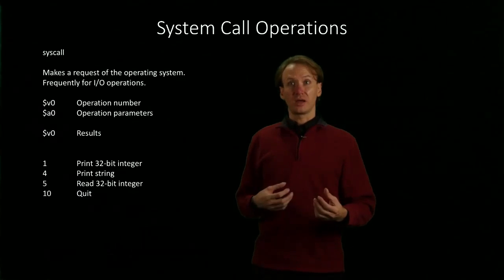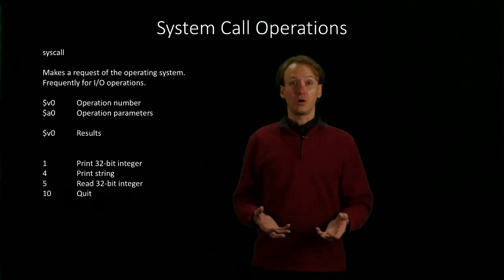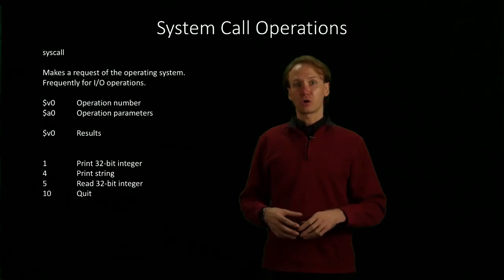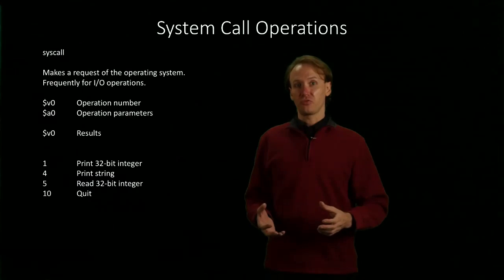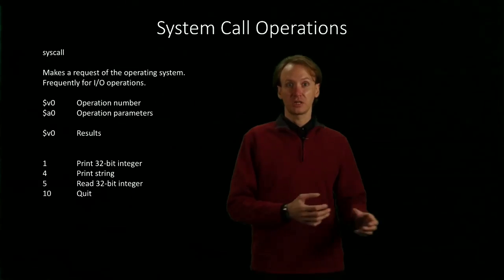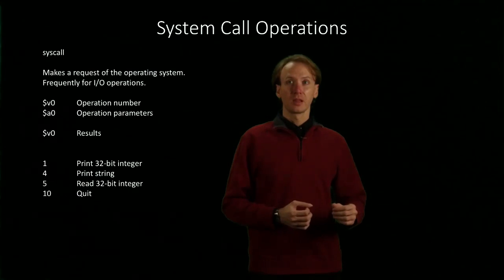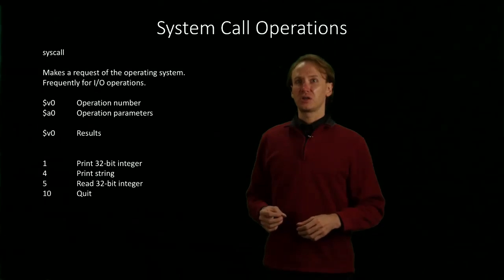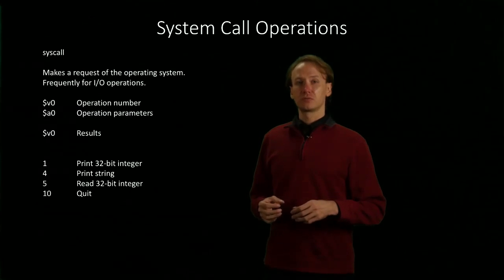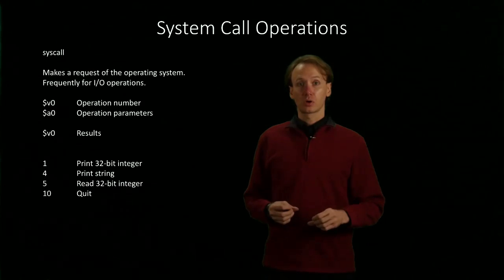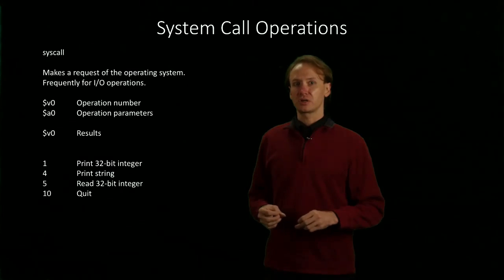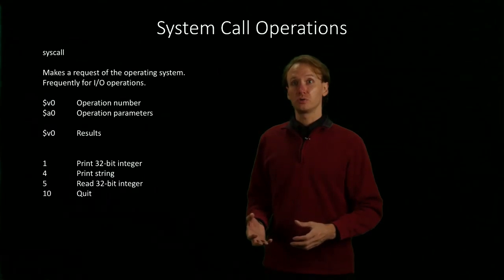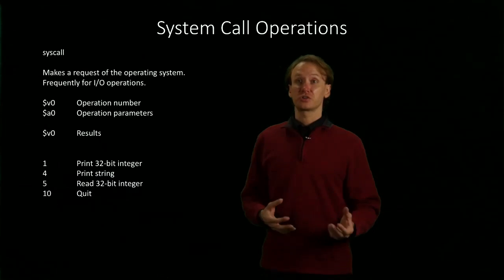The system call is essentially like a function call, but the setup will work a little differently from the function calls that we'll see later. In this case, we're going to put a number that corresponds to the operation that we want to do into register v0.